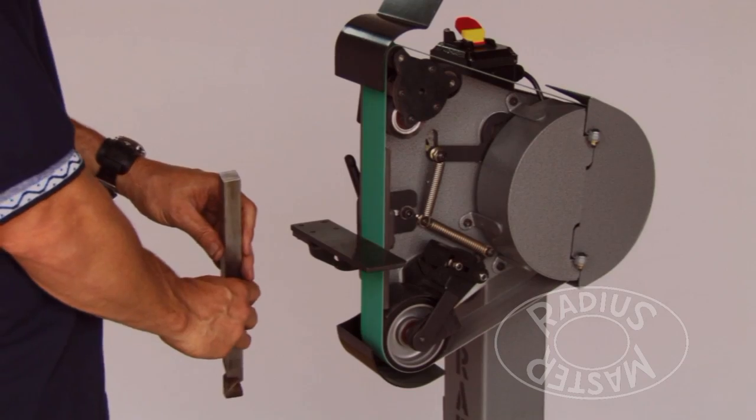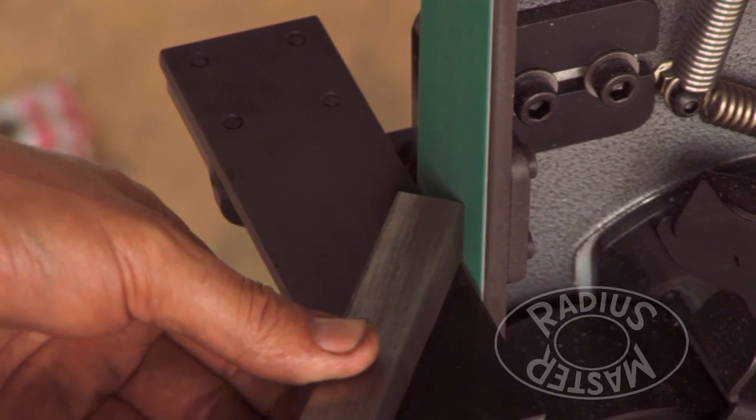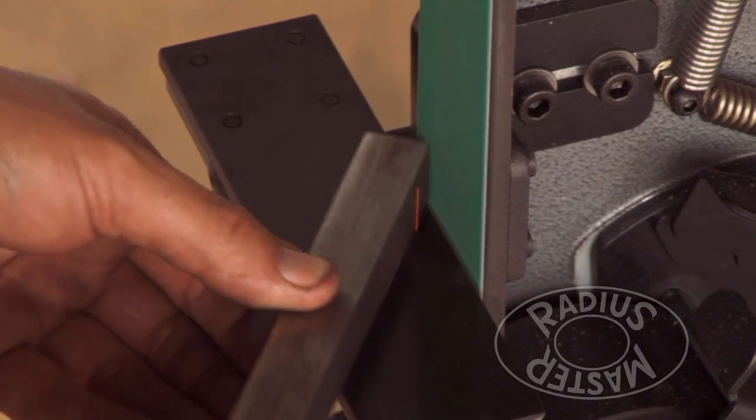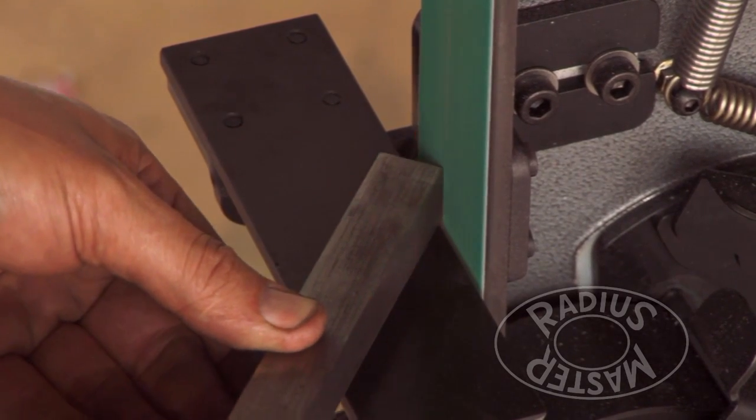Squaring ends and accurate chamfering greatly improves component quality over conventional deburring methods. Again, perfect tracking stability allows the use of all of the belt.